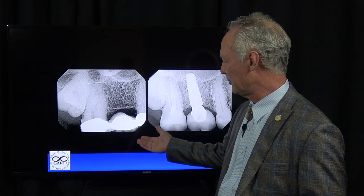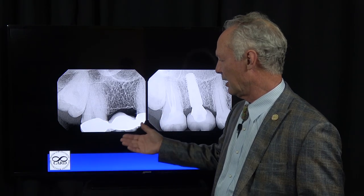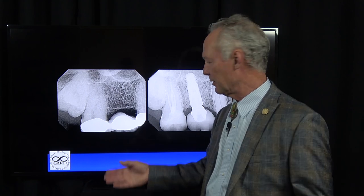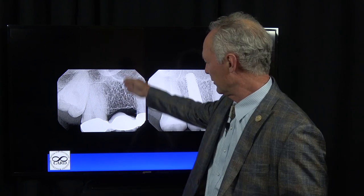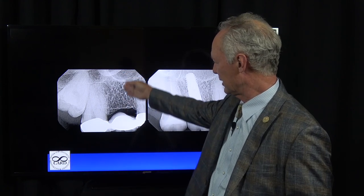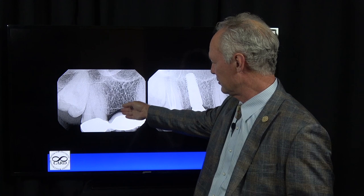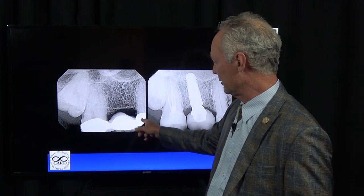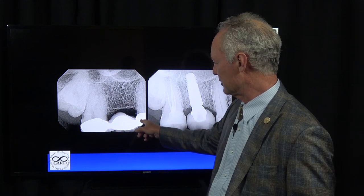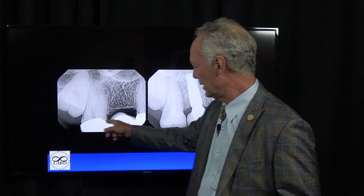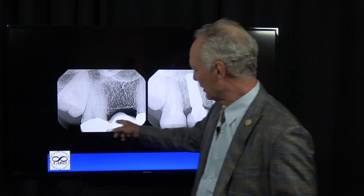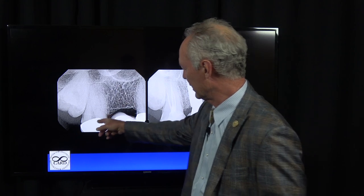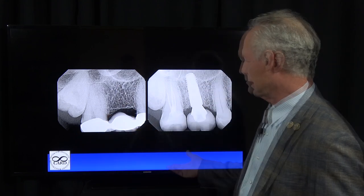You wonder why do you call it a fixed bridge? Well, it's like a bridge over a river, with the river being the edentulous area where the tooth is missing and the land being the tooth on either side. So this bridge goes across the river — the missing area — and connects to the teeth on either side.